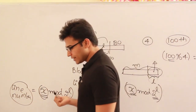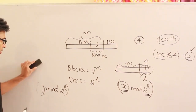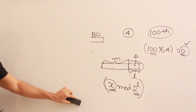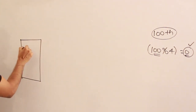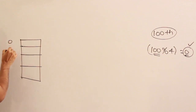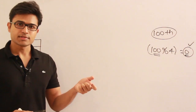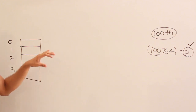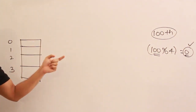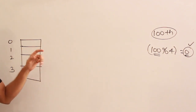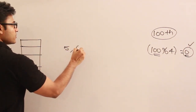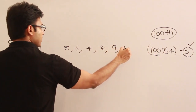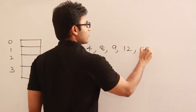Let us say we have a cache with 4 lines: line 0, 1, 2, and 3. The CPU generates block requests: 5, 6, 4, 8, 9, 12, 15, 20. For block 5: 5 mod 4 = 1, so 5 is placed in line 1. For block 6: 6 mod 4 = 2, placed in line 2. For block 4: 4 mod 4 = 0, placed in line 0. For block 8: 8 mod 4 = 0, which conflicts with block 4 already in line 0 — so 4 is replaced by 8. For block 9: 9 mod 4 = 1, placed in line 1. For block 12: 12 mod 4 = 0, placed in line 0. For block 15 and 20: 15 mod 4 = 3, placed in line 3; 20 mod 4 = 0, placed in line 0.